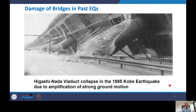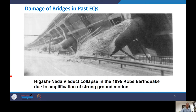Another example is the Hirasi-Nada viaduct collapse, also from the 1995 Kobe earthquake. In this case, you can see the reinforcement is clearly visible, meaning the concrete cover has totally spalled off. This is also a failure due to soil amplification and ground amplification, which we will discuss in detail in one of the lectures during this module. Once the piers fell down, the bridge naturally collapsed.